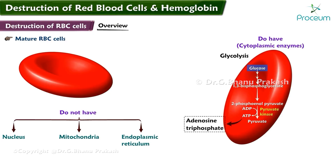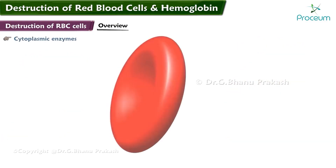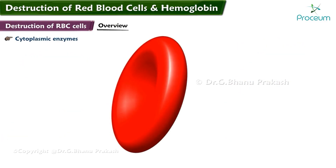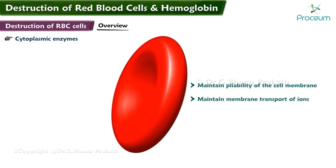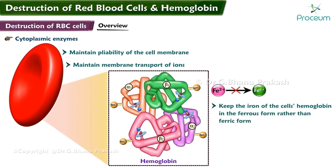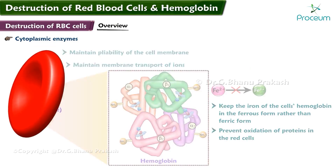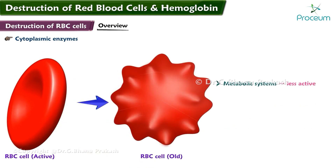small amounts of adenosine triphosphate. These enzymes also maintain pliability of the cell membrane, maintain membrane transport of ions, keep the iron of the cells' hemoglobin in the ferrous form rather than the ferric form, and prevent oxidation of the proteins in the red cells.